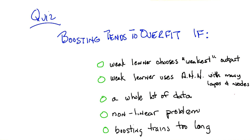The second one is: the weak learner that boosting is using is in fact a neural network learner. And just for specifics, let's say this is a neural network that has many, many layers and many, many nodes — so it's a big, powerful neural network.